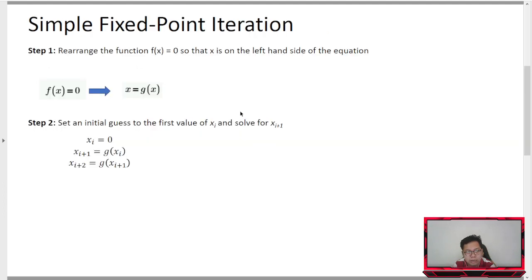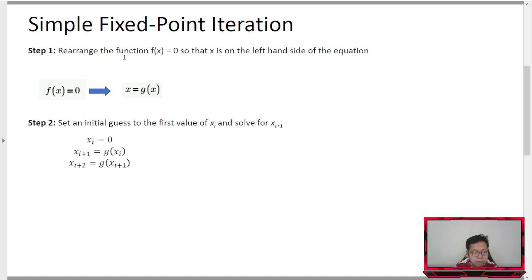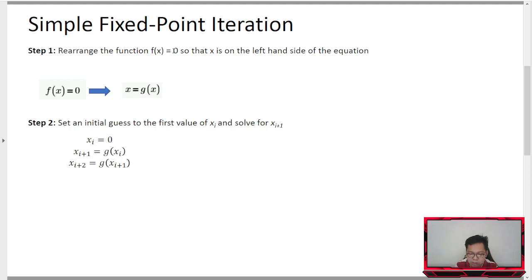So we only have one initial assumption. Let's look at our example. This method is actually very easy — I like it. Simple fixed point iteration only has two steps and it is also easy to program. Unfortunately, we need to do some manual algebra in converting our function. Originally, our function is f(x) equal to zero, but we need to convert it into a specific form. I think it will be clearer if I give an example.